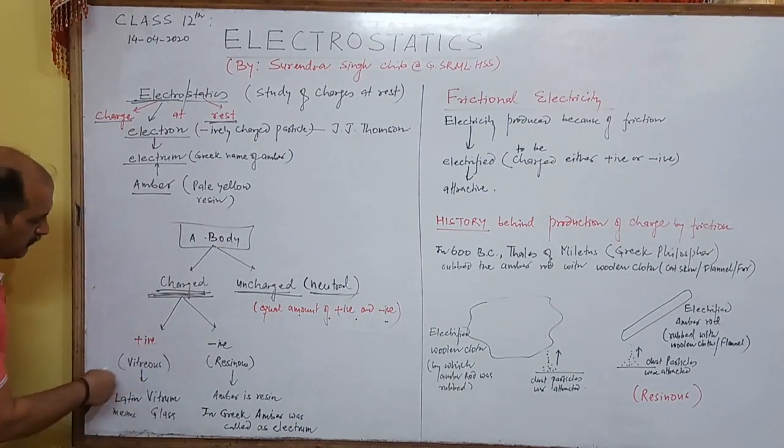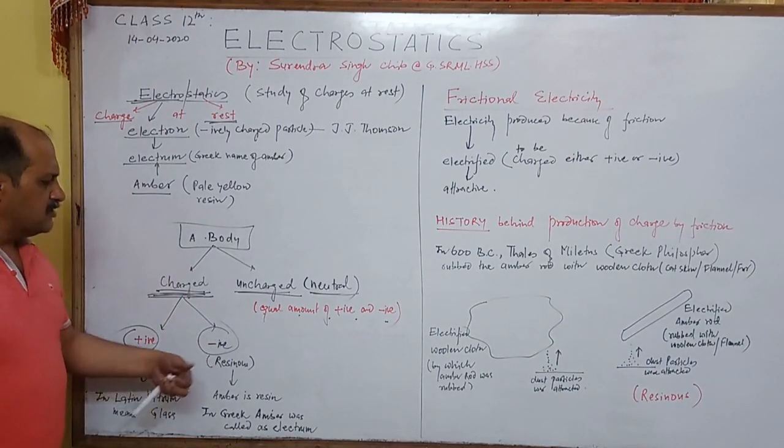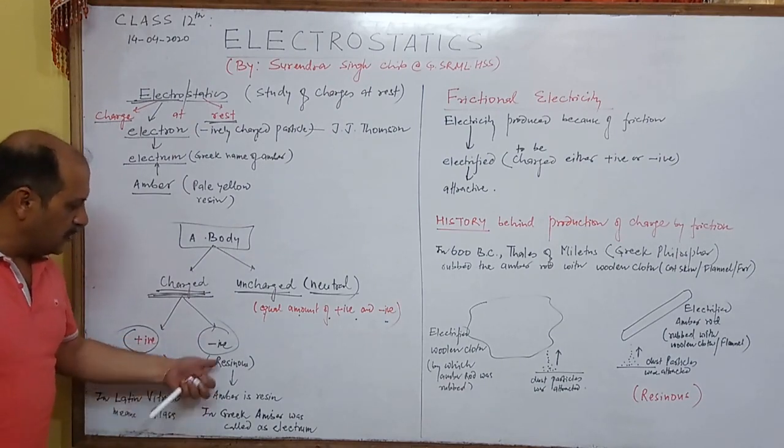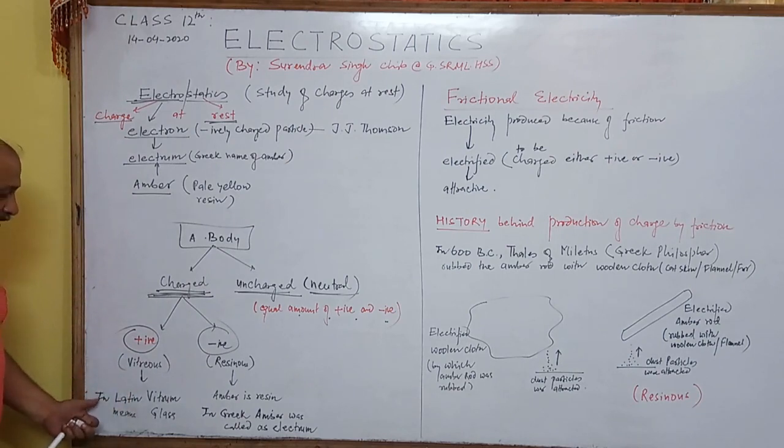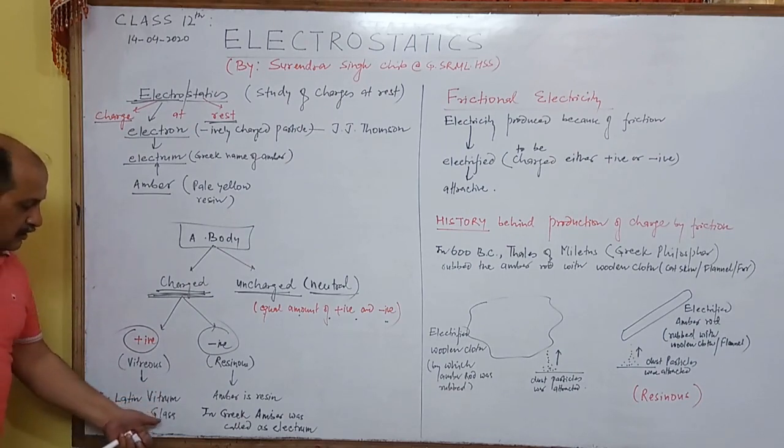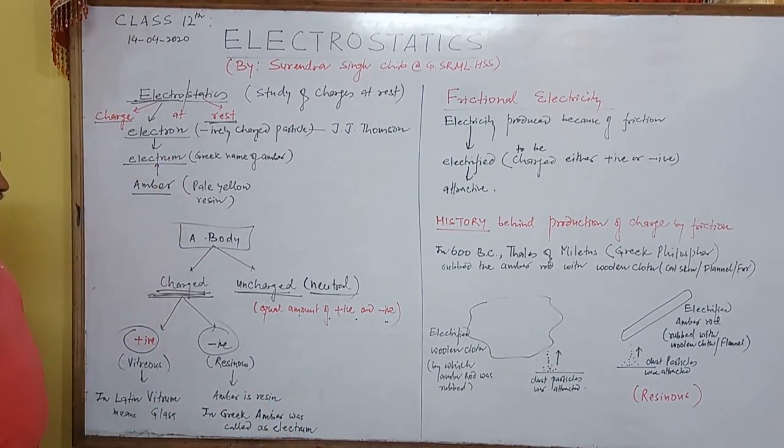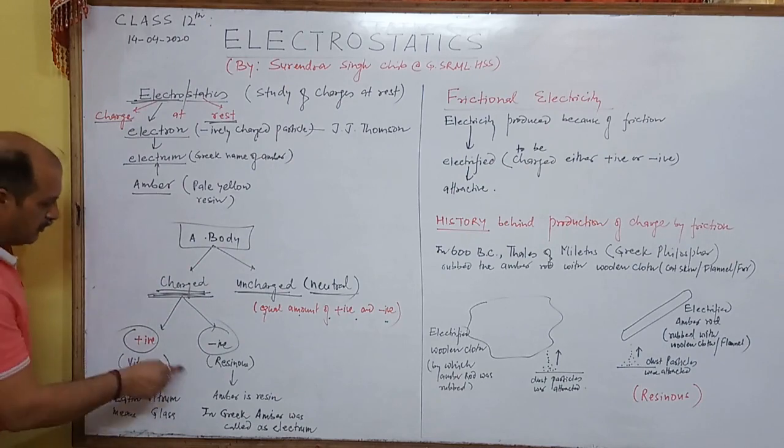Today we know Charged body is a positively charged body or negatively charged body. Negatively charged, previously were called as resinous. Why resinous? Because resin was, amber was resin. Vitress, positively charged body is called vitress. Why vitress? Because in Latin vitress means glass. In Greek, amber was called as electro.